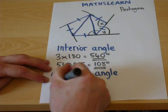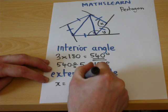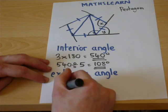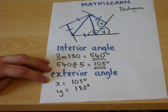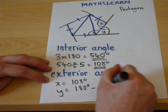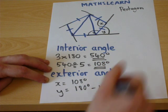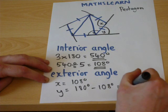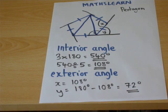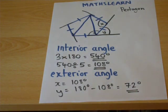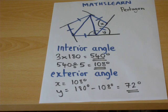Because X was 108 degrees, Y must be a straight line 180, take away 108, which equals 72 degrees. So that is a way of finding an exterior angle of a pentagon.